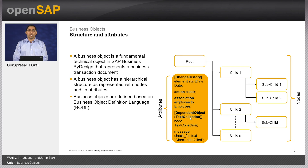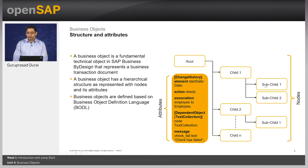Number three: the associations, which are of two types — internal or composite association, and external or cross-business-object association. By default, the framework provides composite associations, while cross-business-object association has to be defined in the business object, like the association to the standard business object employee mentioned here. Composite association can be from root to child 1, and from child 1 to sub-child 1. The association between child 1 and sub-child 1 is called the to-parent association, and the association between sub-child 1 and the root is called the to-root association. Note that custom business objects and all their attributes are defined in Cloud Studio using the Business Object Definition Language, or in short, BODL.